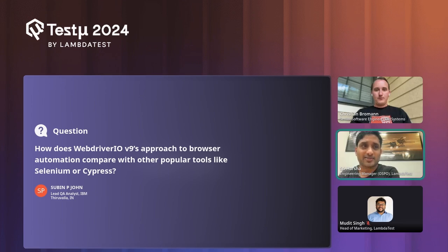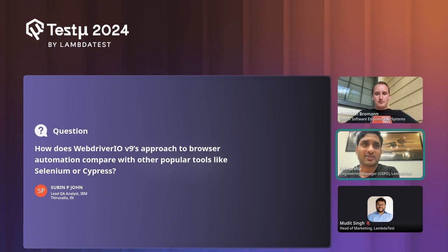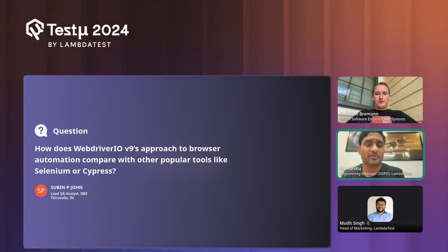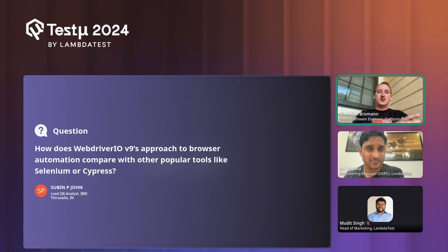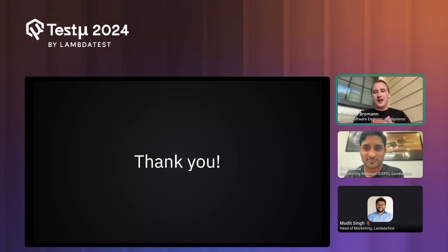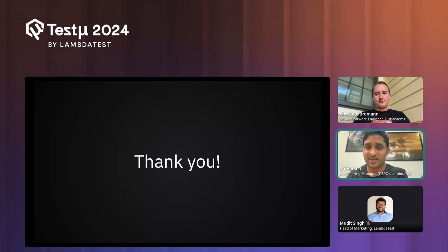Q: How does WebdriverIO v9's approach compare with Selenium or Cypress? A: Cypress works on the CDP protocol behind the scenes, which is different from the WebDriver standard. Selenium and WebdriverIO both use the classic WebDriver protocol, and both projects are now implementing WebDriver BiDi. WebdriverIO has always been based on the WebDriver protocol, allowing automation across all browsers in the same way — one test works the same in Chrome as in Firefox. We continue to invest in the WebDriver specification and focus on web standards for automation.